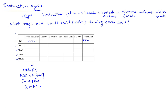Looking at the registers during instruction fetch: the PC is read and also written to because it's incremented. The instruction register is only written to. The effective address register is not involved. The MAR is both read and written. The MDR is both written to and read. So for all instructions, during instruction fetch, MAR and MDR are both read and written, PC is read and written, and IR is written.